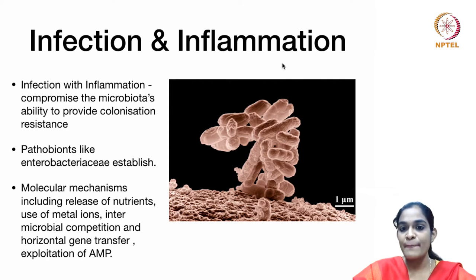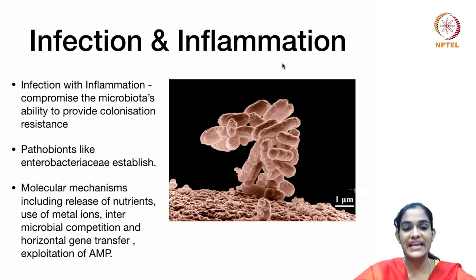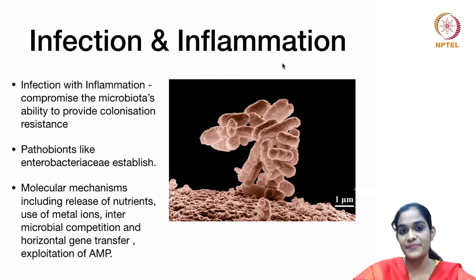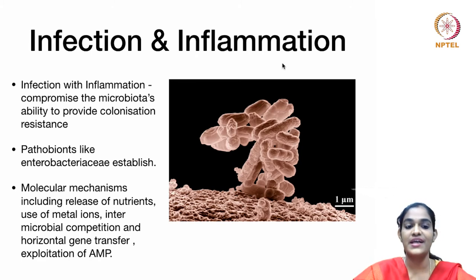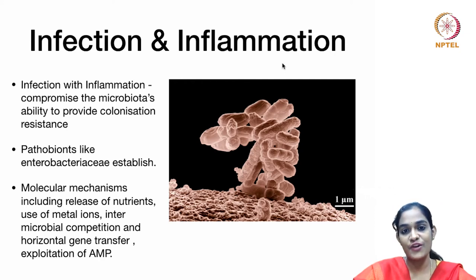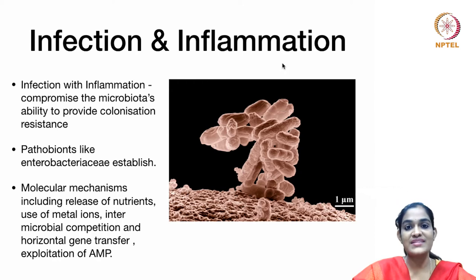Infection and inflammation are very important causative factors for dysbiosis. Infection with inflammation can compromise the microbiota's ability to provide colonization resistance. As a consequence, pathological microorganisms like Enterobacteriaceae establish themselves through nutrients released from dead and dying epithelial cells. They produce chelating agents such as siderophores to attract iron ions necessary for colonization. They compete with other microbial species, release bacteriocins to eliminate related organisms, use horizontal gene transfer to acquire virulence factors, and exploit antimicrobial peptides produced by the host.